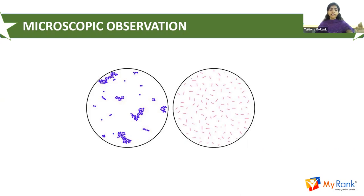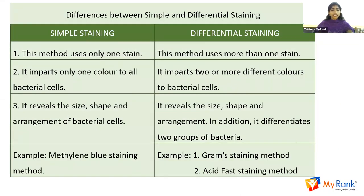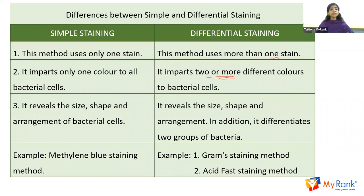The difference between simple staining and differential staining: simple staining uses only one stain and imparts only one color to all bacterial cells, revealing size, shape, and arrangement. Differential staining uses more than one stain, imparts two or more different colors to bacterial cells, and additionally differentiates between two groups of bacteria. Examples of simple staining include methylene blue; examples of differential staining include Gram staining and acid-fast staining.